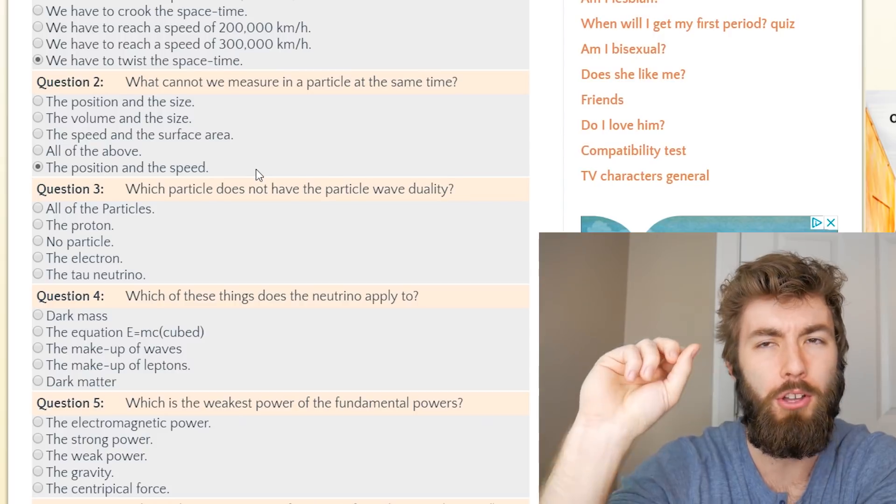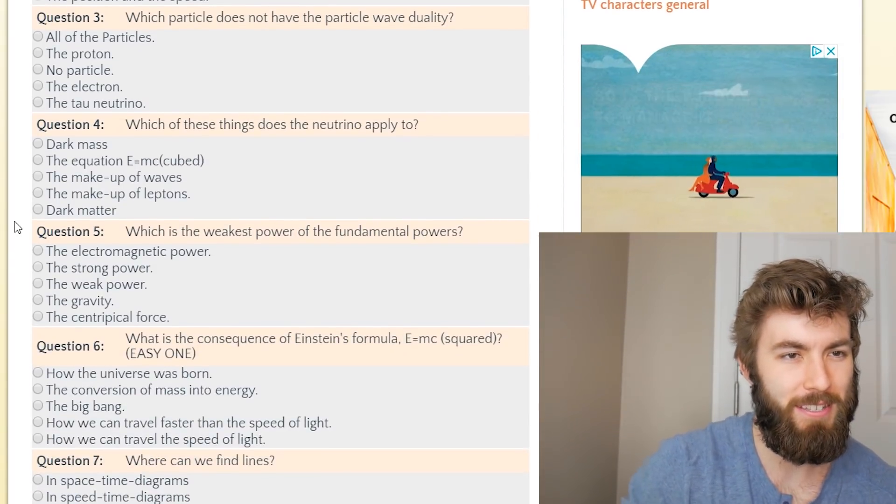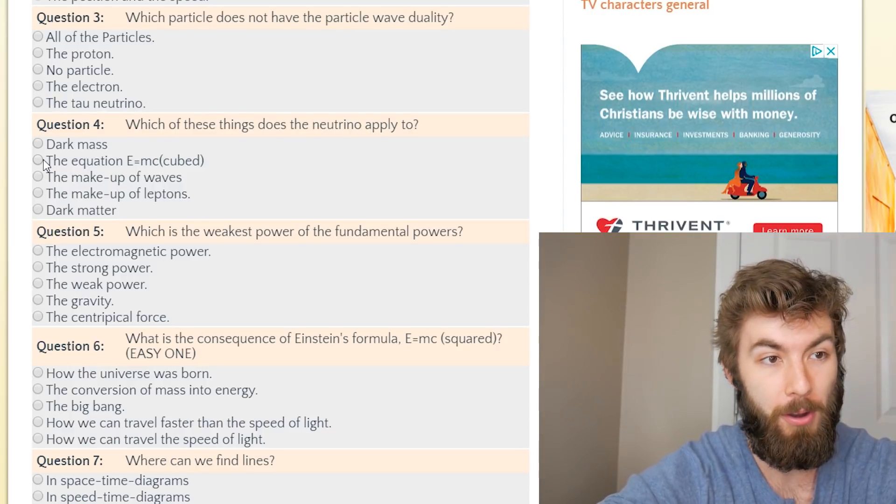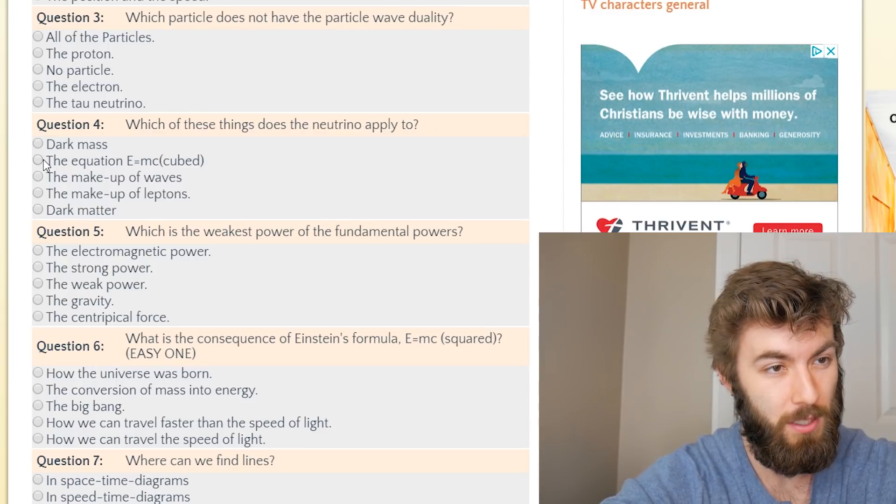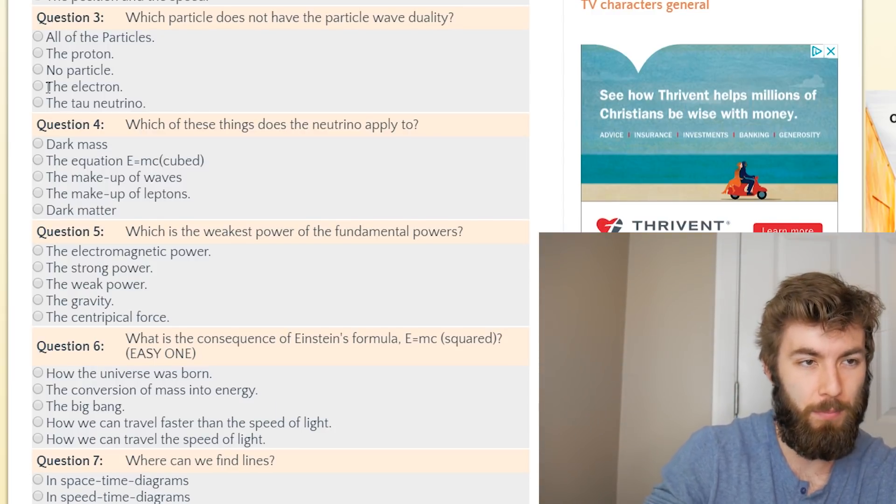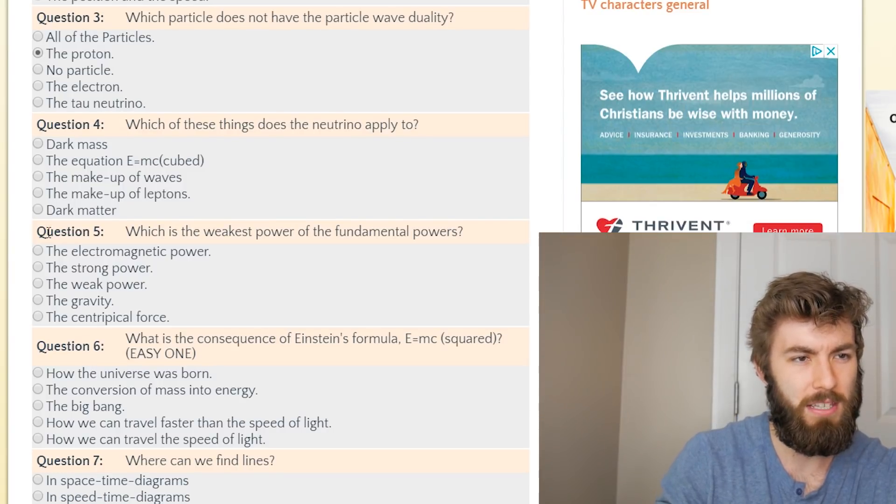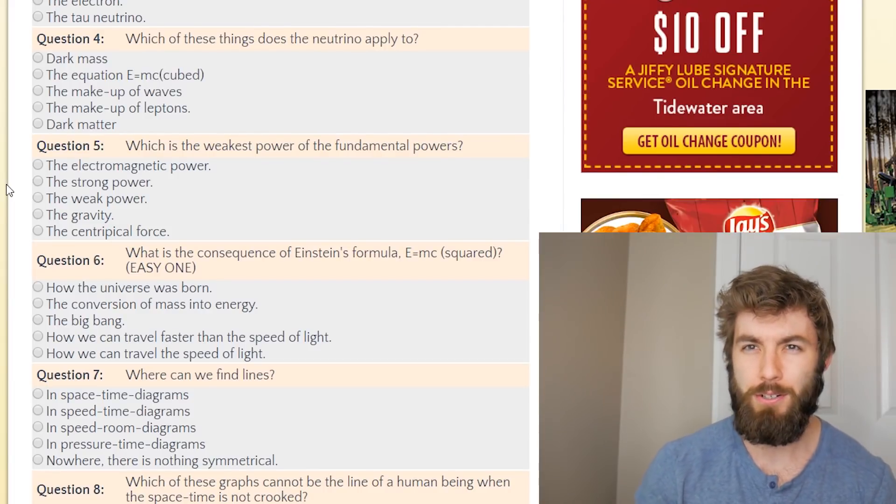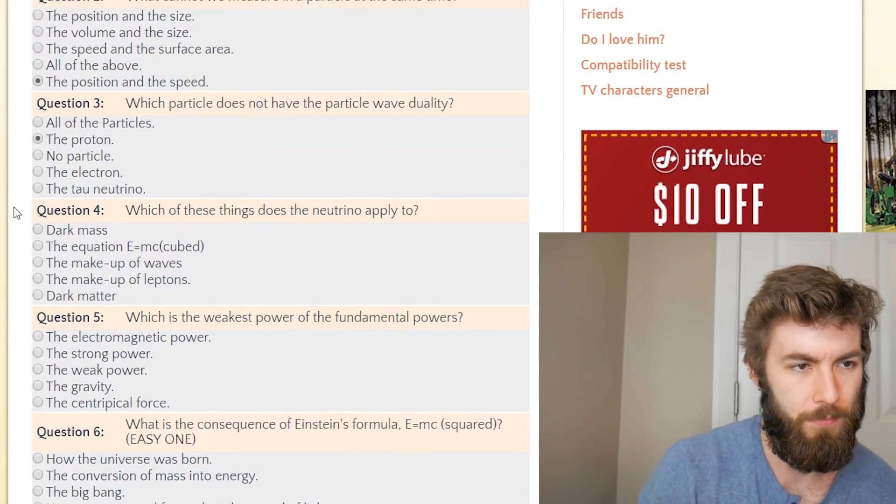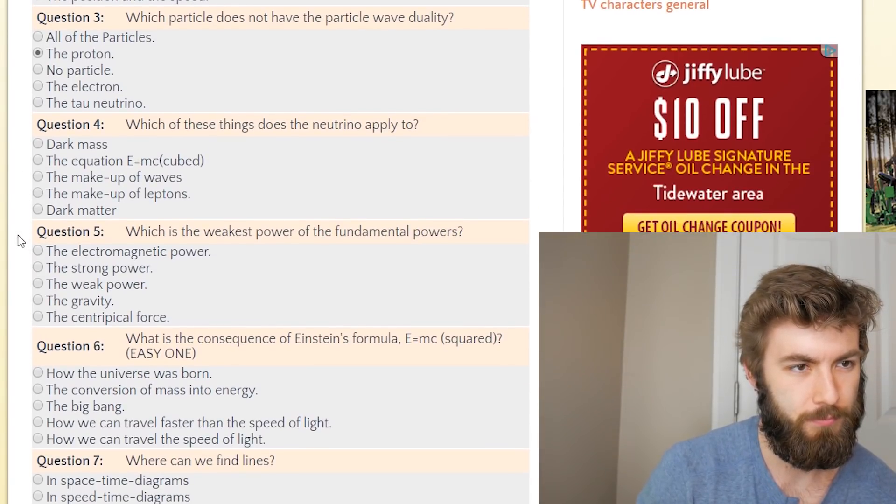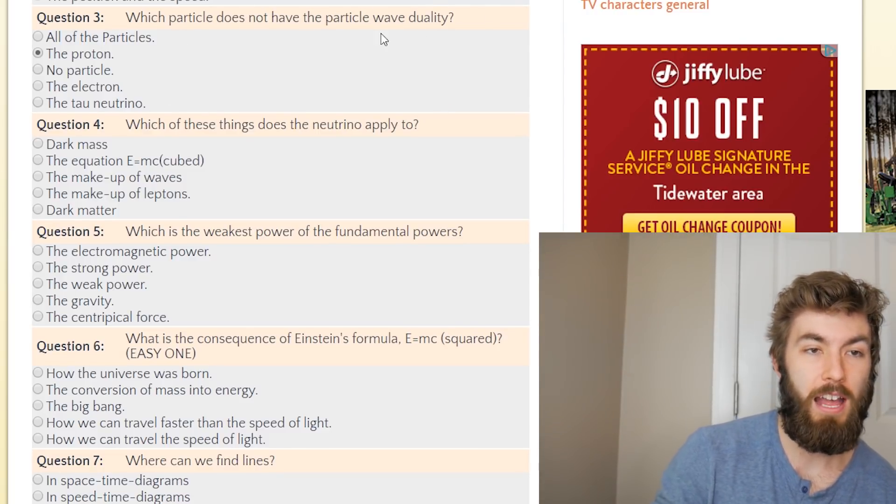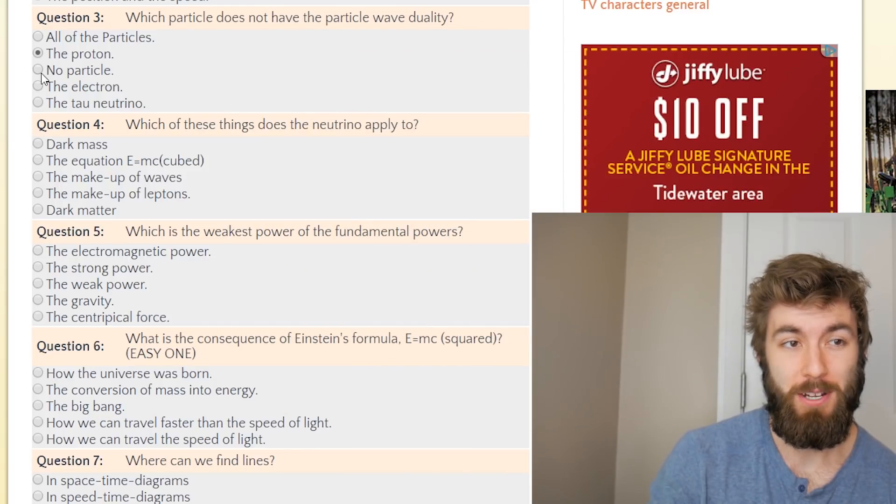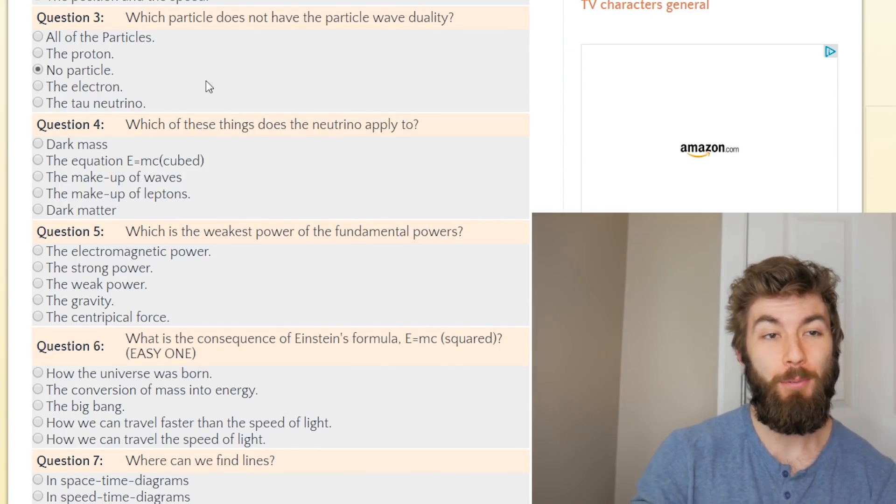What quantum operators wouldn't commute? I'm going to have to say I'm pretty sure volume commutes with size. Which particle does not have the wave-particle duality? All of the particles. Every single one of them. The proton, no particle, the electron, the tau neutrino. I guess that would just be the proton. I don't know if that's accurate though. I feel like all of them can exhibit some kind of wave-like nature. But let's go with the proton. Oh, that's saying which particle does not have? So no particle does not have. I'm going to go with no particle does not have the particle wave duality.